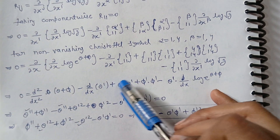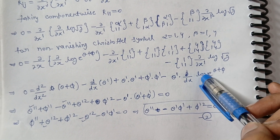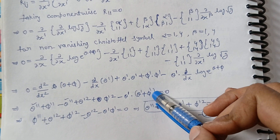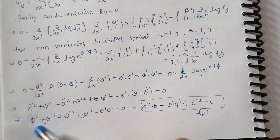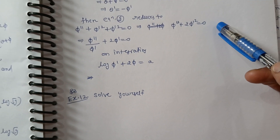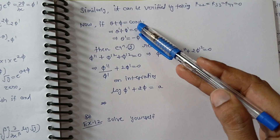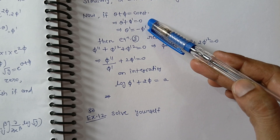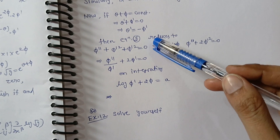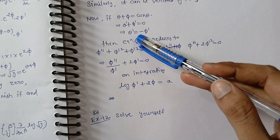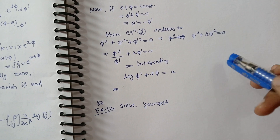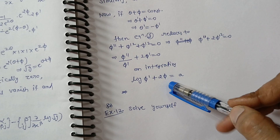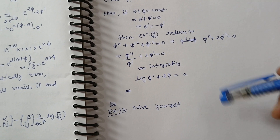Similarly computing R₂₂, R₃₃, and R₄₄, we prove the stated results. Then to show that theta plus phi equals constant, we differentiate to get theta-prime plus phi-prime equals 0, so theta-prime equals minus phi-prime. Substituting theta-prime equals minus phi-prime in the second equation, the two quantities become the same, giving 2 phi-prime squared. Integrating this equation, the proof is complete.